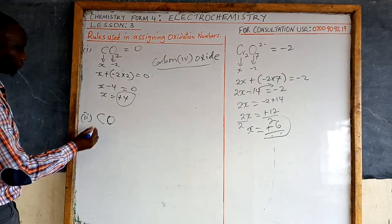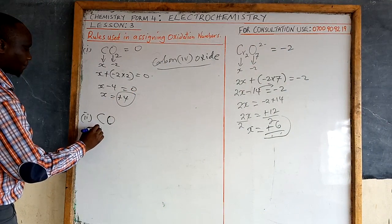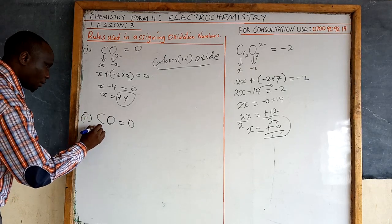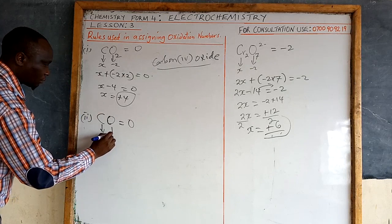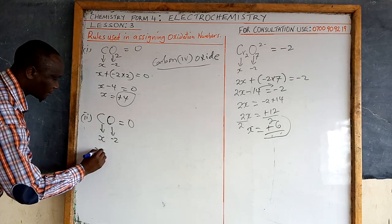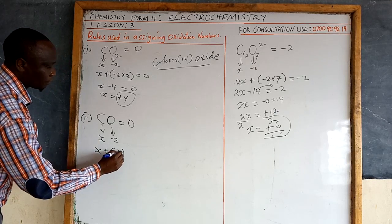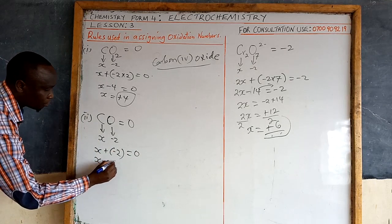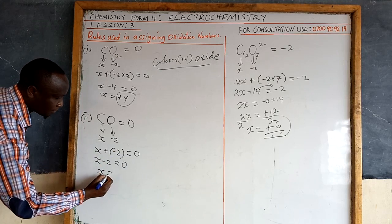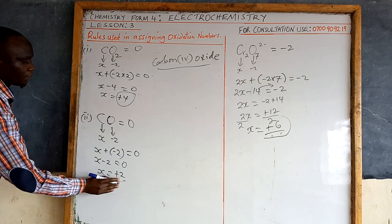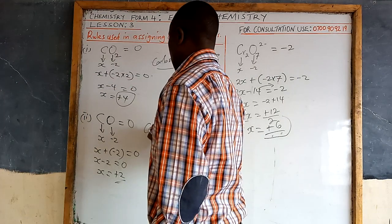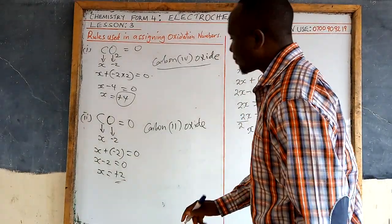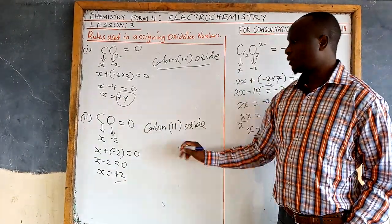For CO, similarly the total equals zero. Carbon is x, oxygen is −2, and there is one oxygen atom. So: x + (−2) = 0, giving x − 2 = 0, therefore x = positive two. This is why CO is called carbon(II) oxide — the oxidation number of carbon in this compound is +2.